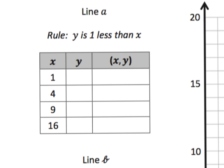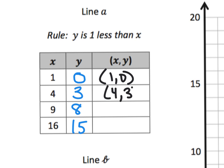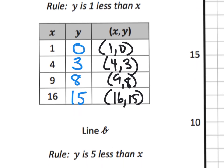The first rule says y is one less than x. We've been given the x values, so we just use the rule to find y. When x is 1, y is 0; when x is 4, y is 3; when x is 9, y is 8; and when x is 16, y is 15. Our ordered pairs for Line A are (1, 0), (4, 3), (9, 8), and (16, 15).